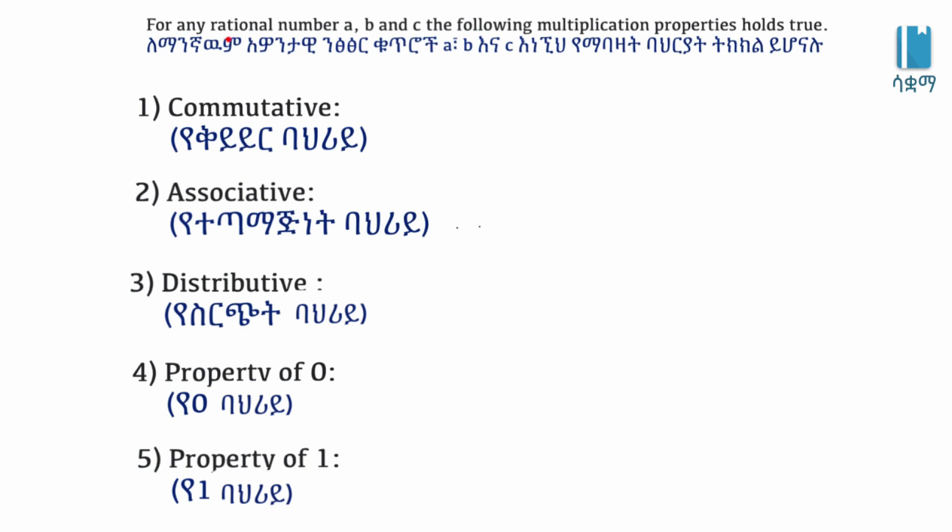For any rational number A, B, and C, the following multiplication properties hold true.